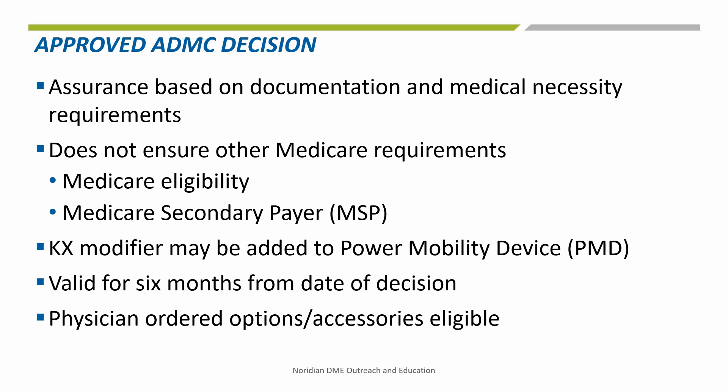An approved ADMC decision will provide the supplier and the beneficiary assurance that the beneficiary, based on the information submitted with the request, will meet the medical necessity requirements Medicare has established for the item. An approved decision does not provide assurance that the beneficiary meets Medicare eligibility requirements, nor does it assure that any other Medicare requirements have been met. Only upon submission of a complete claim can the DME MAC make a full and complete determination.